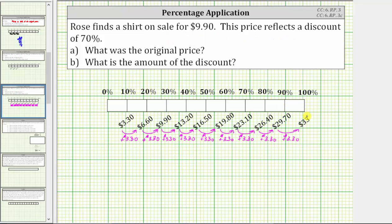Here's the completed tape diagram. Notice that 100% corresponds to $33, which was the original price. We can also notice that 10% of the original price is $3.30. If we multiply $3.30 by 10, this does give us $33, which is 100% of the original price.